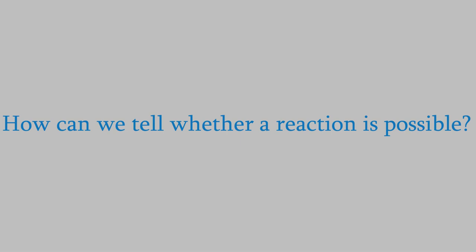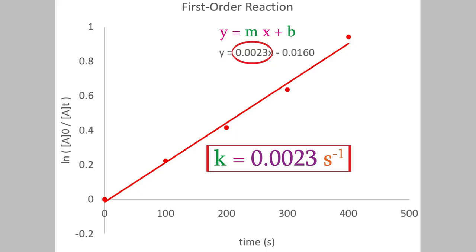How can we tell whether a particular chemical reaction is possible? We actually haven't addressed that question yet. In the first part of the course, we looked at the kinetics of chemical reactions, which allowed us to find out the rates of reactions and how the rate is affected by conditions like temperature and concentration. But it didn't tell us whether the reaction is possible in the first place.